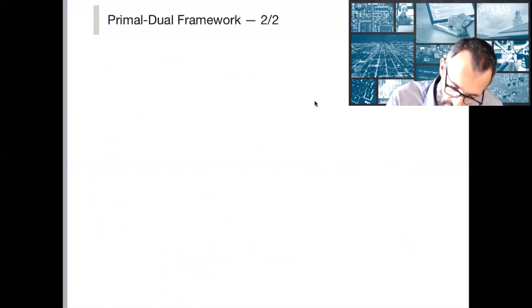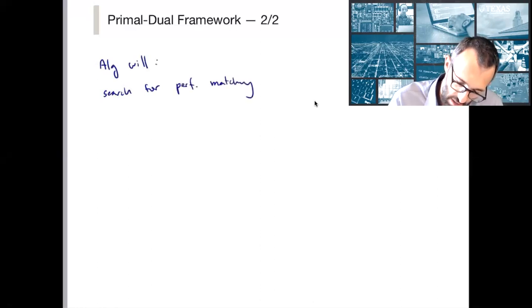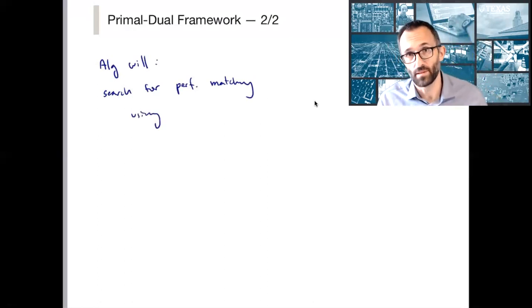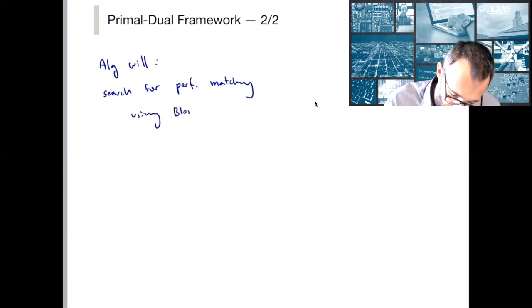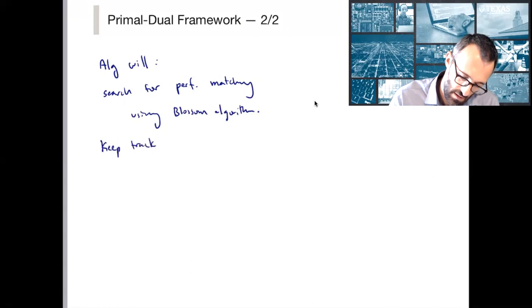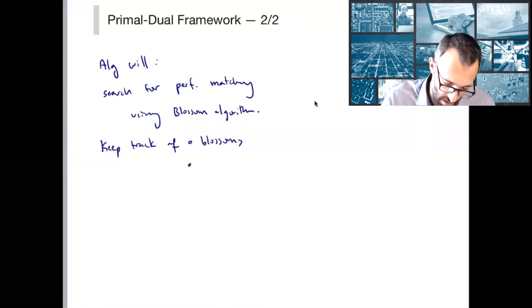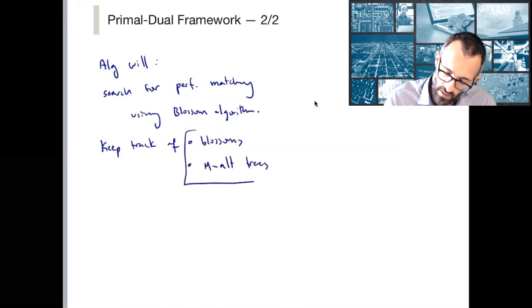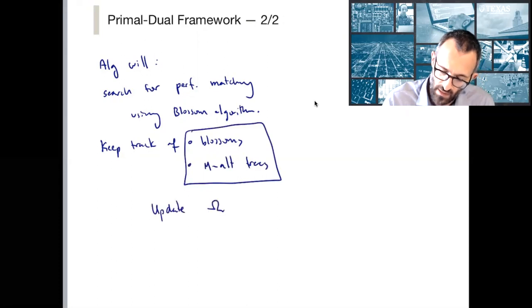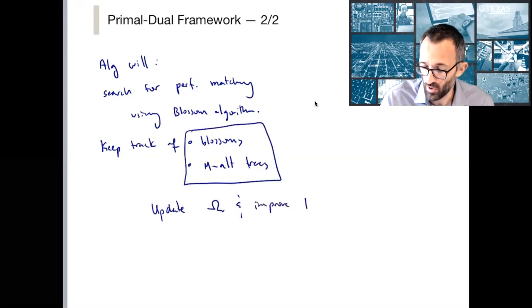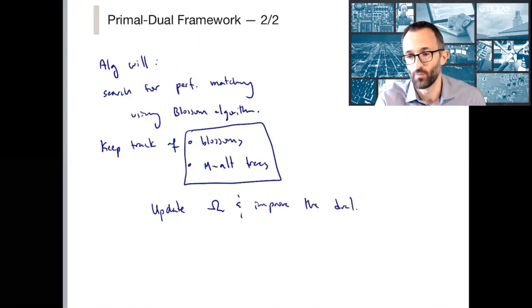So the algorithm will search for a perfect matching using our Blossom algorithm or ideas from the Blossom algorithm of Edmonds that we saw several lectures ago. And what we're going to do is we're going to keep track of the Blossoms. What else does the algorithm produce? It produces Blossoms. It produces alternating trees. And using these together, we're going to update omega and y and improve the dual. And that is the story that we are going to tell in the next lecture. We're going to pick that up then. Thank you very much.